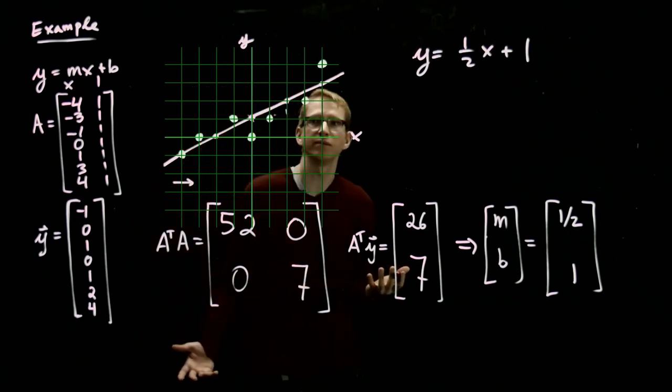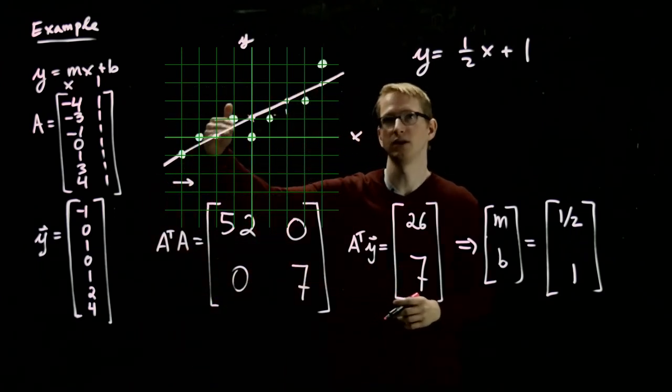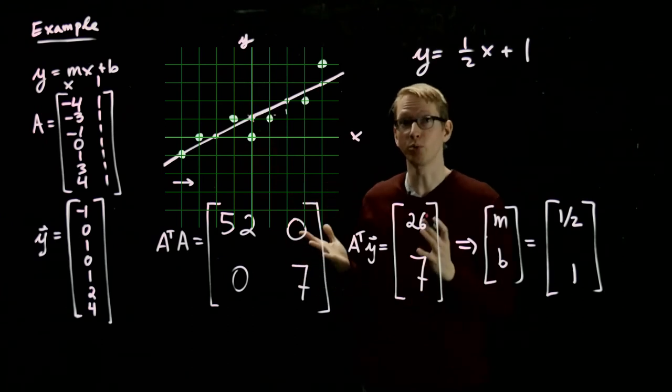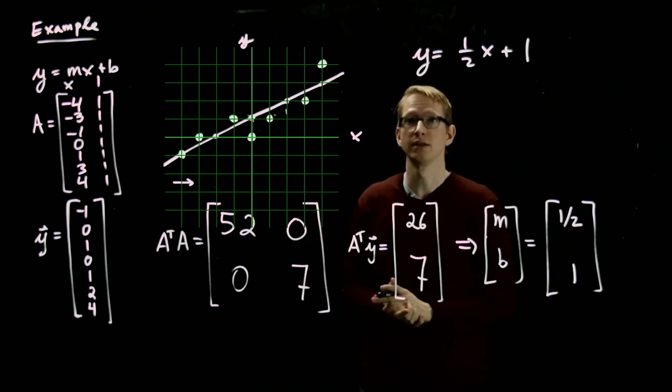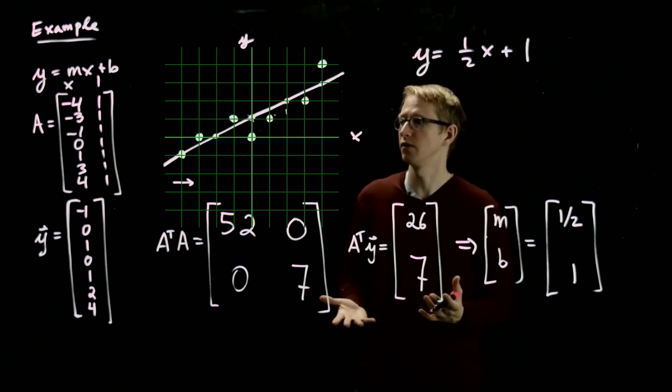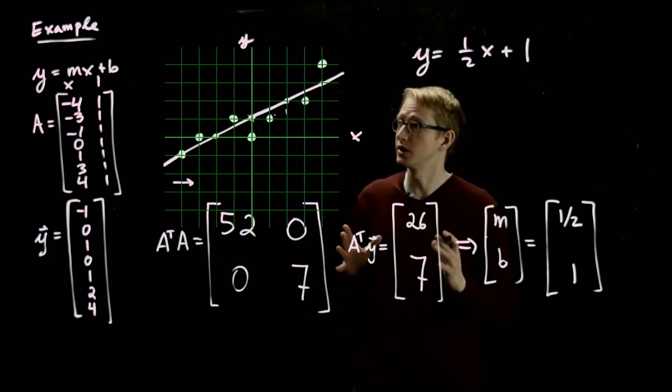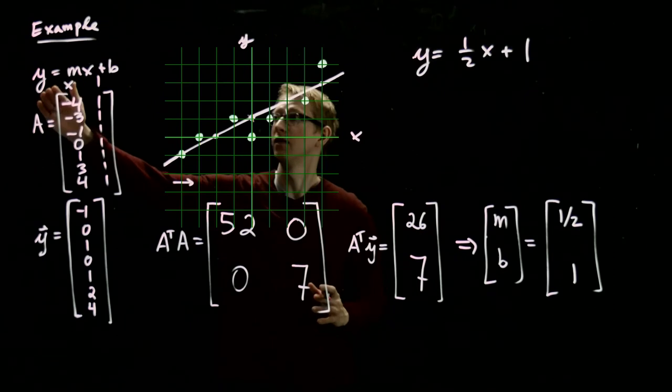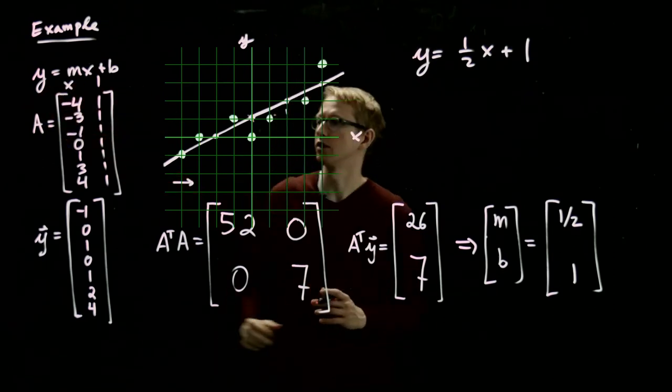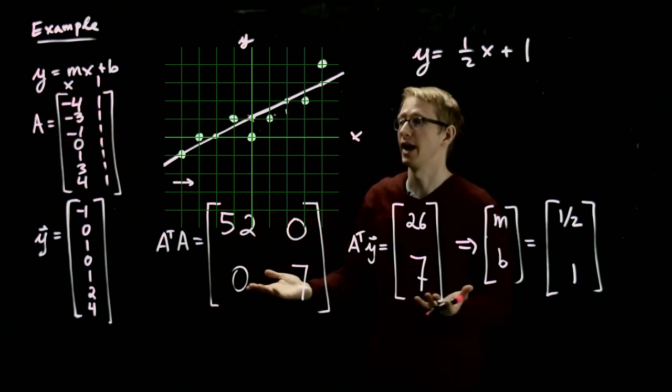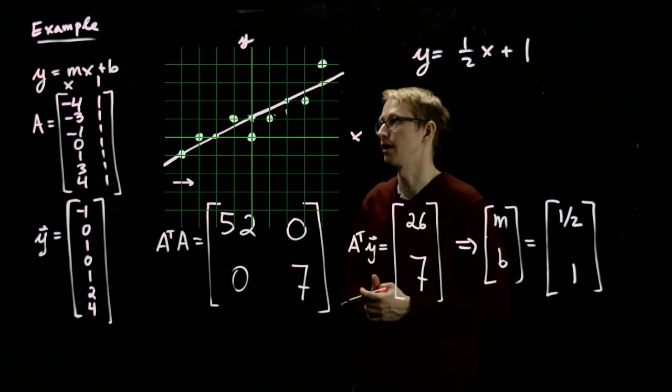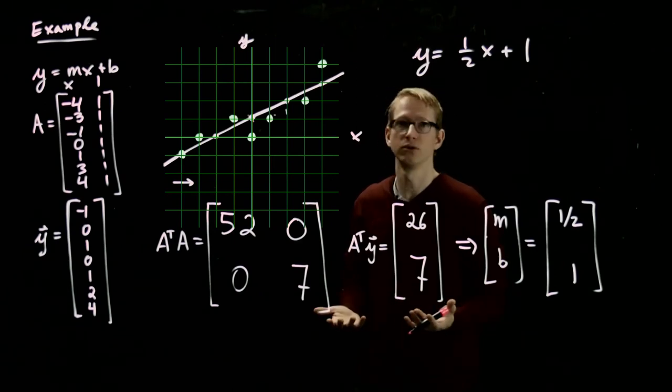So this straight line here, if you notice, it happens to actually go through one of the data points. That might not happen, but as you can see, it doesn't go through most of them, but it's a pretty reasonable approximation to this data set. So this is how you would actually solve a least squares problem, specifically in the context of fitting data to a linear curve, or rather an affine curve to be technically correct. And this is how you would do it in such an example.